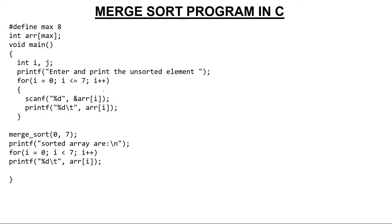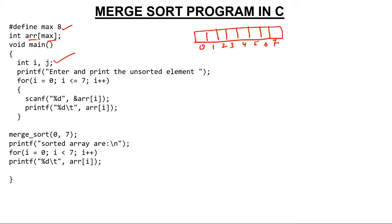So let's start with the program. I have created a macro of size 8, then created an array of the same macro size — that is, an array of size 8 with indices 0, 1, 2, 3, 4, 5, 6, and 7. Then I created two variables i and j, and printed the unsorted elements. I asked the user to enter elements from index 0 to 7. Suppose the user entered 9, 3, 2, 1, 5, 6, 10, and 12 — as they enter values, I'm also printing those values.